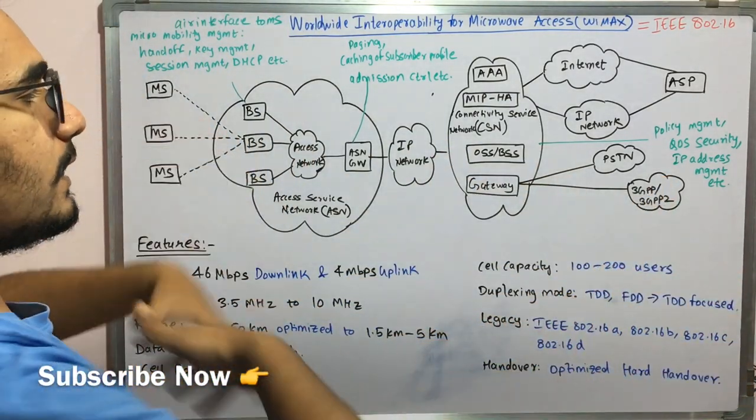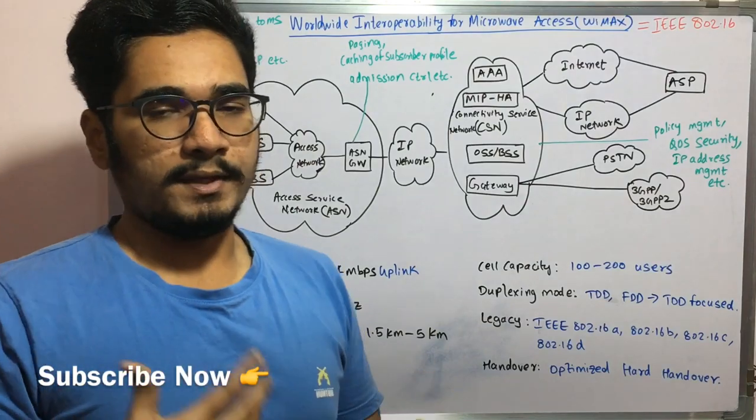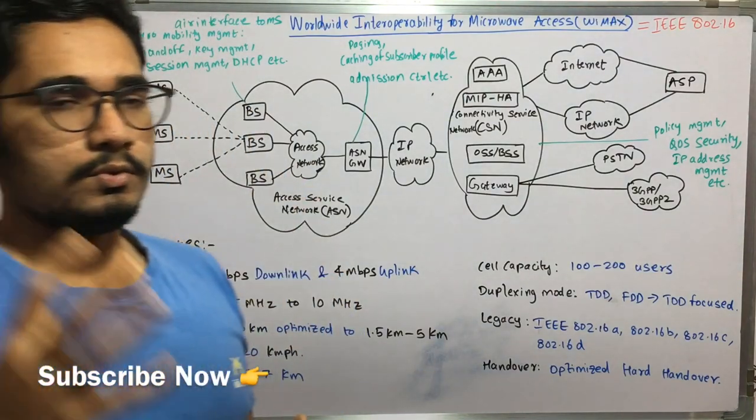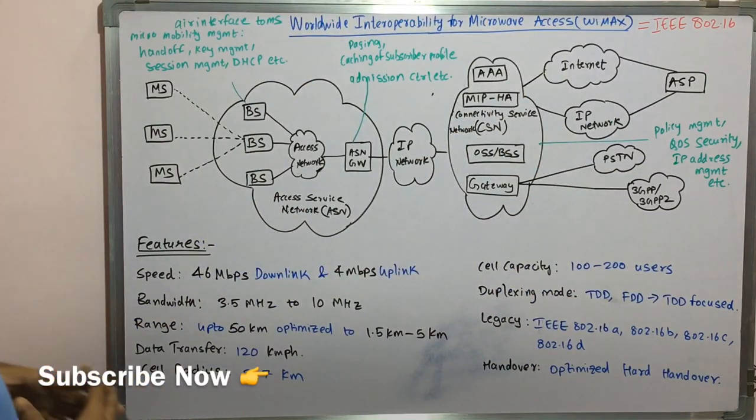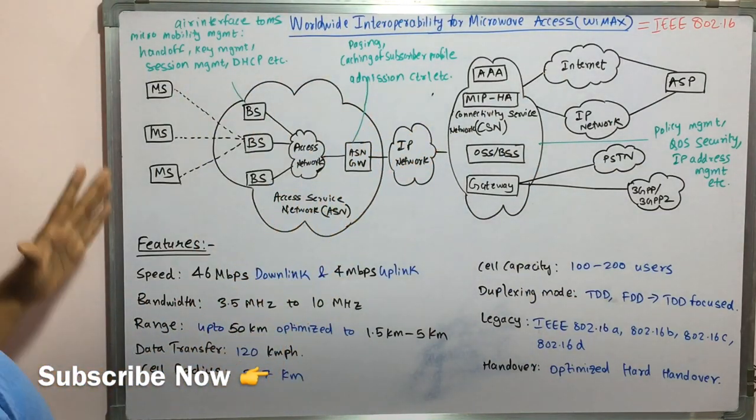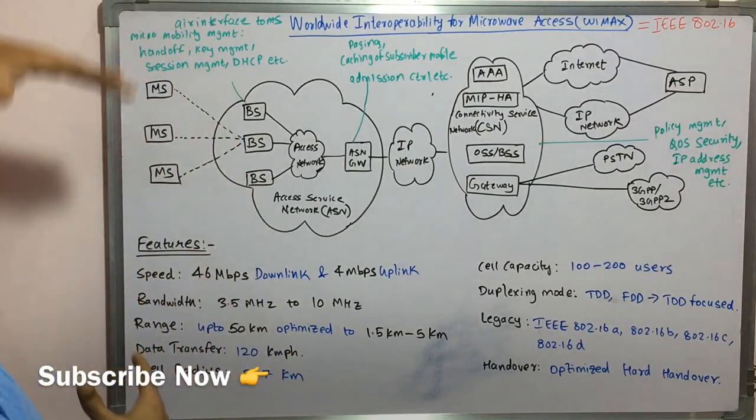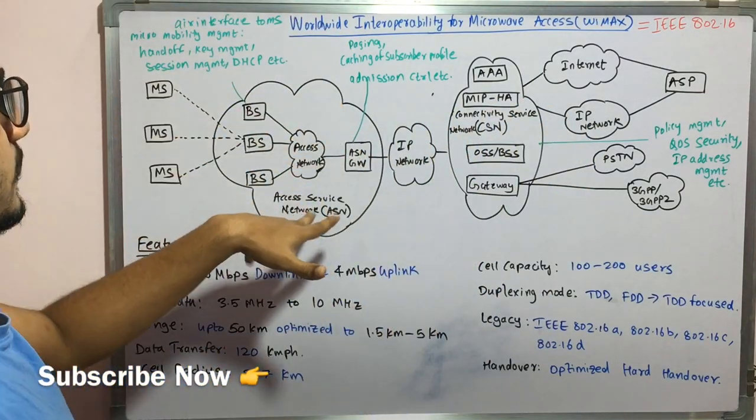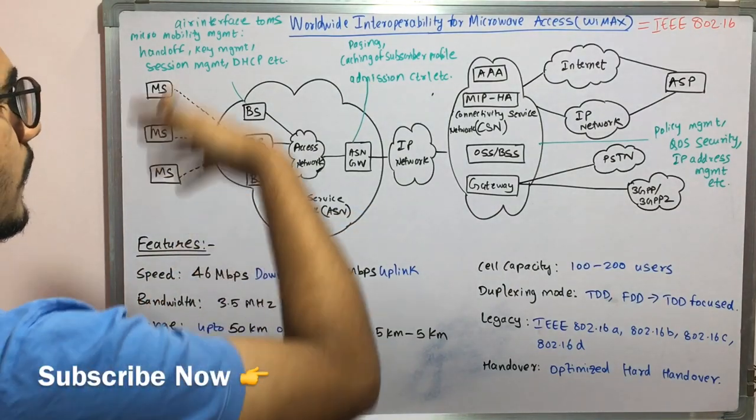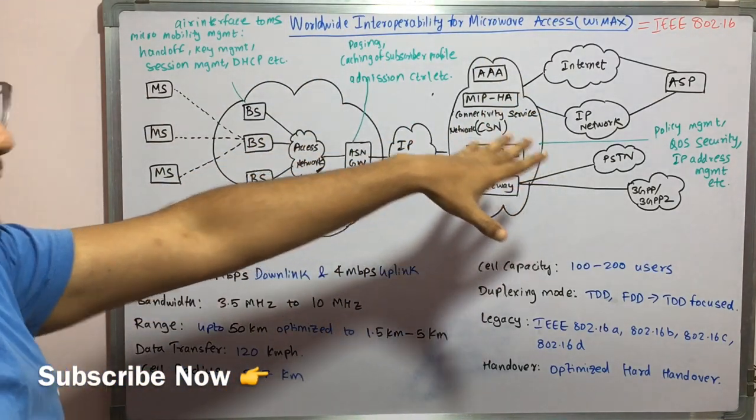So we have this entire big architecture. This is an architecture based upon IP. So IP is mainly functional throughout the entire architecture. So to begin with, we have this MS that is mobile stations. Mobile stations are connected to these two layers. Basically, the second layer in this is the access service network and then you have the connectivity service network CSN.